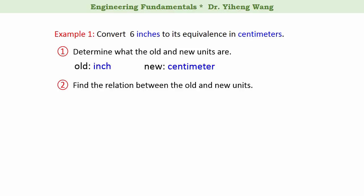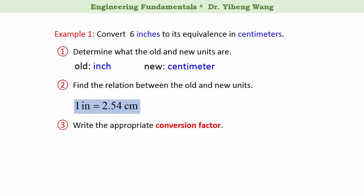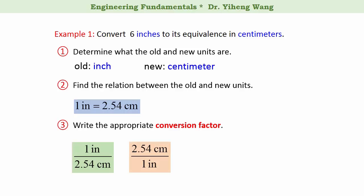Next step: we need to write the equality of inch and centimeter. The equalities used in unit conversion can be found in your textbooks, online, or in cell phone applications. We can find that the relation is 1 inch equals exactly 2.54 centimeters. Based on each equality, we can always write two conversion factors: 1 inch over 2.54 centimeters, or 2.54 centimeters over 1 inch. Because of the equality, both of these conversion factors equal pure number one.